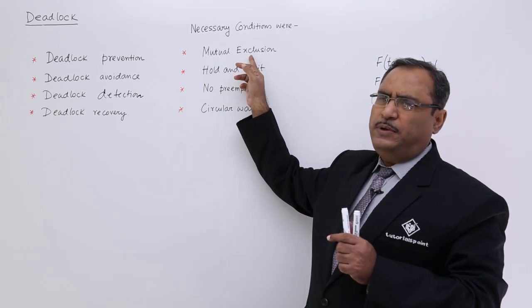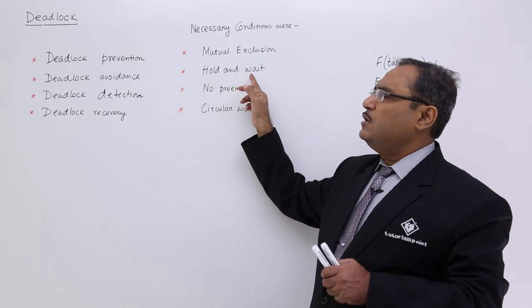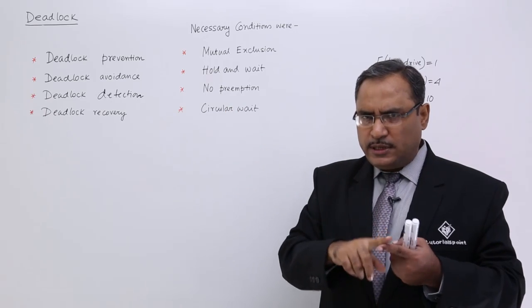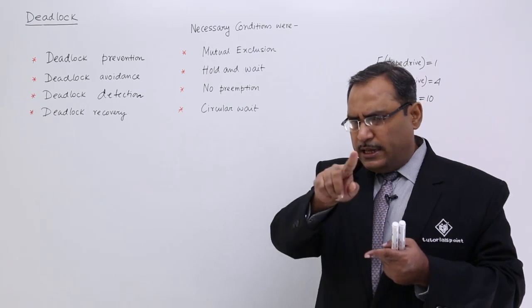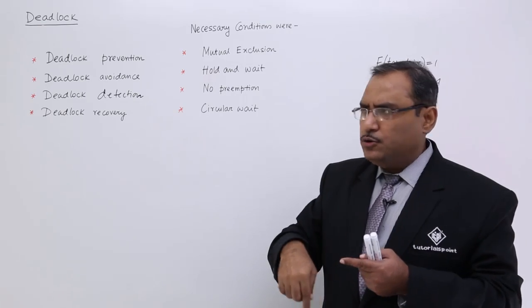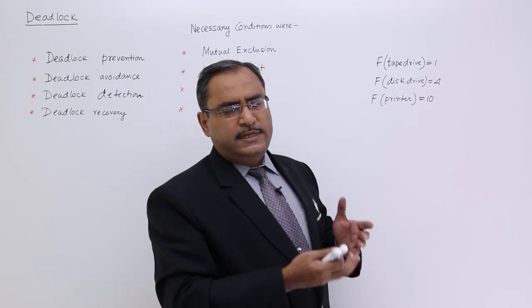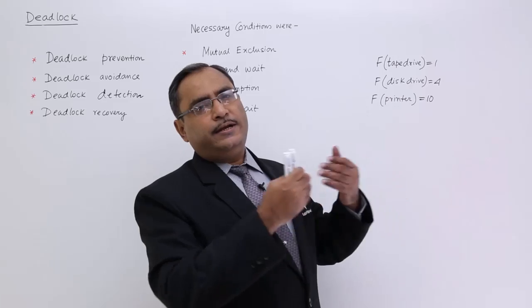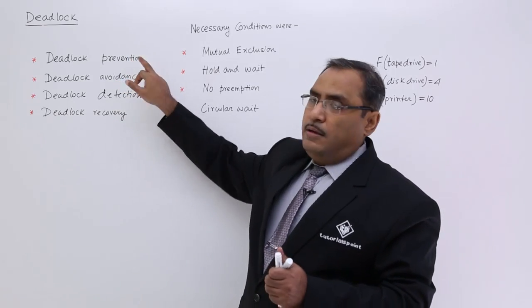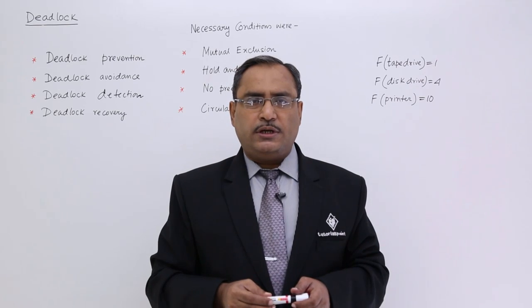So we have discussed: mutual exclusion — do not make all resources non-shareable, some resources are inherently shareable; hold and wait — get all resources then start; no preemption — if a resource is not available, check if it is held by a waiting process and preempt it; circular wait — allocate priorities to resources and processes demanding higher priority resources will inherit higher priorities, so the circular chaining will be broken. This is known as deadlock prevention — solving the necessary conditions. I think you have got the logic. Thanks for watching, watch my next videos.